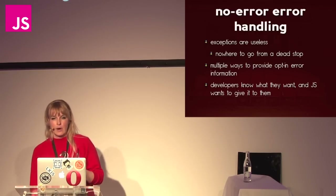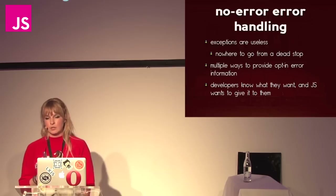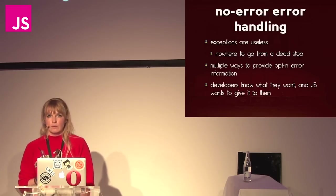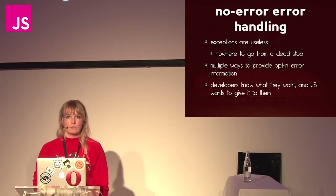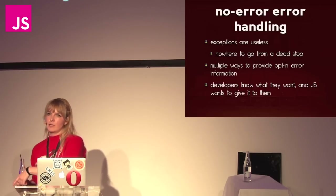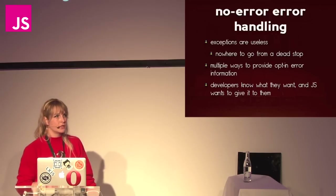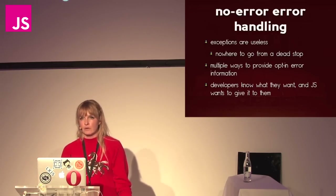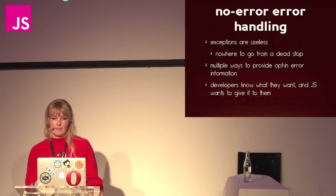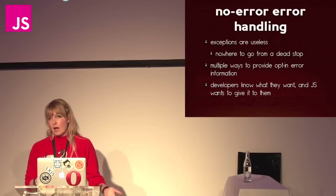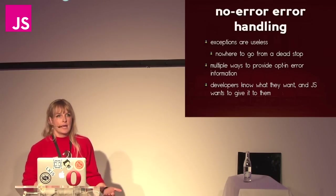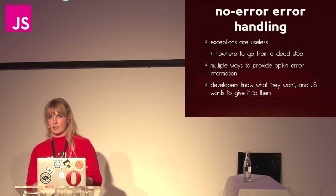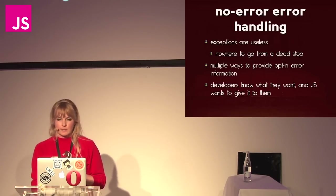Why no error handling? Because exceptions are useless — you can't do anything with them, so you should strive to avoid them rather than indicating to the user how they should avoid them. Your code should avoid them. There are lots of ways to provide opt-in error information so that errors are optional for people who want that information. But why screw up someone's application because your code expected something to be a certain way and it wasn't? If we just give developers access to what they want, that's the way JS works best.